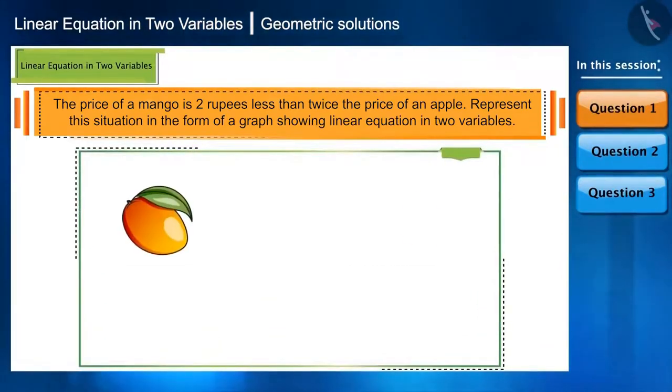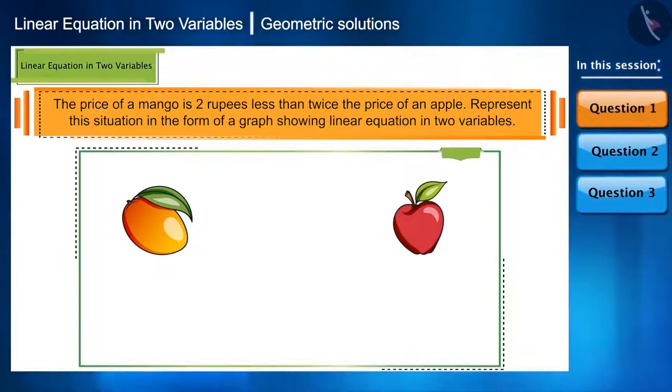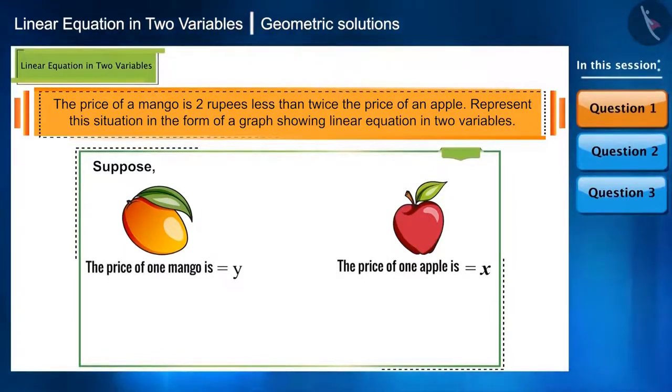First of all, here we have two fruits, mango and apple. We have to make an equation with two variables. So we will consider the price of one fruit as x and the price of the other fruit as y. So suppose the price of one apple is x and the price of one mango is y. Now, according to the condition, we will form an equation.